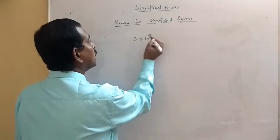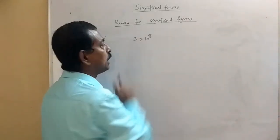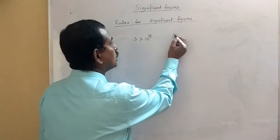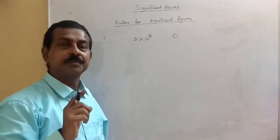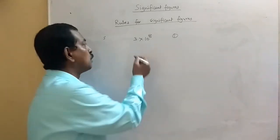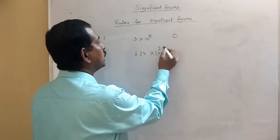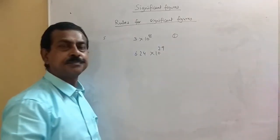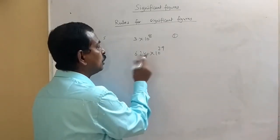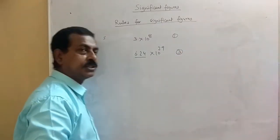For example, 3 × 10⁸ — it is 3 into 10 to the power 8. The power of 10 is non-significant, so the number of significant figures will be 1. Another example: 6.4 × 10²⁹ — the power of 10 is not taken into consideration, only these digits are counted, so the number of significant figures will be 3 (actually 2 for 6.4).